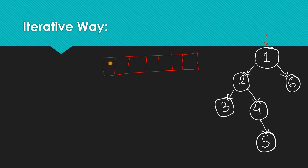Let's start doing the level order traversal. We'll start from the root and first push our node into the queue. Whenever we are popping a node out of the queue, we will increment a count variable. Initially our count variable will be zero. After pushing node 1 into the queue, we pop it out and increment our counter, so our count becomes one.